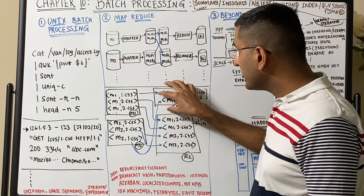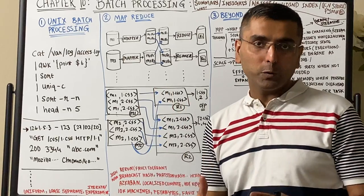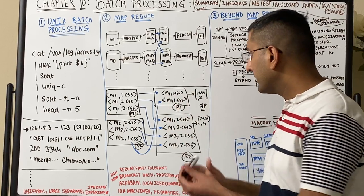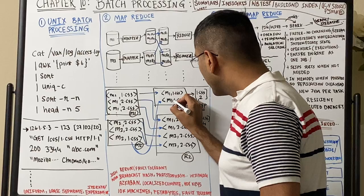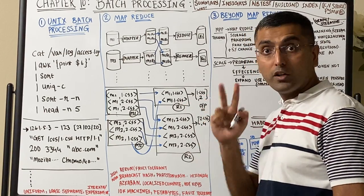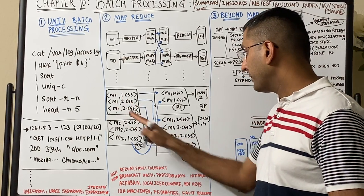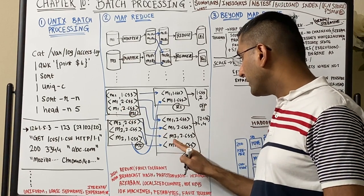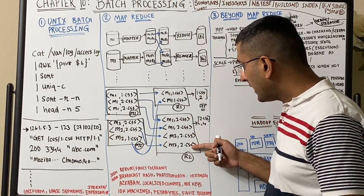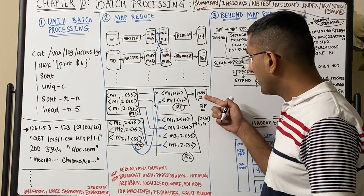Once the reducer receives all the `1.css` records from multiple machines, it has a complete view. It sees `1.css` appeared in mapper 1 and mapper 2, so it counts two instances and outputs `1.css: 2`. Similarly, the reducer for `2.css` sees references from mapper 1 and mapper 2 totaling four instances, and outputs `2.css: 4`.